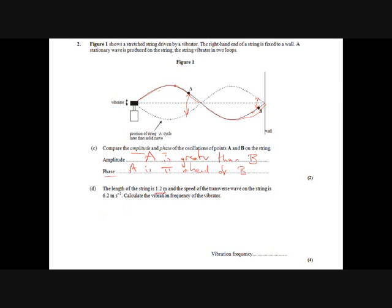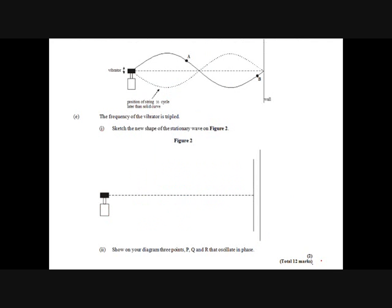The length of the string is 1.2 meters. So this is a nice easy one, because that is one wavelength. And the speed is 6.2 meters per second. Calculate the vibration frequency. So again, this is F equals C over lambda. 6.2 over 1.2 is 5.2, 5.2 hertz. Bit of a gift of four marks there, hopefully.